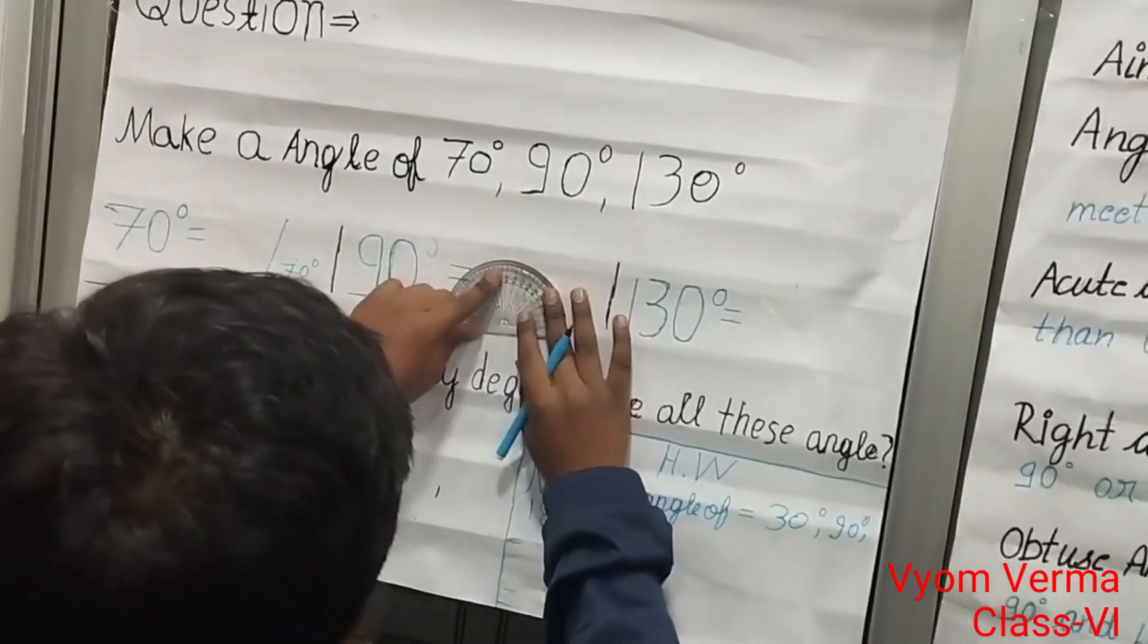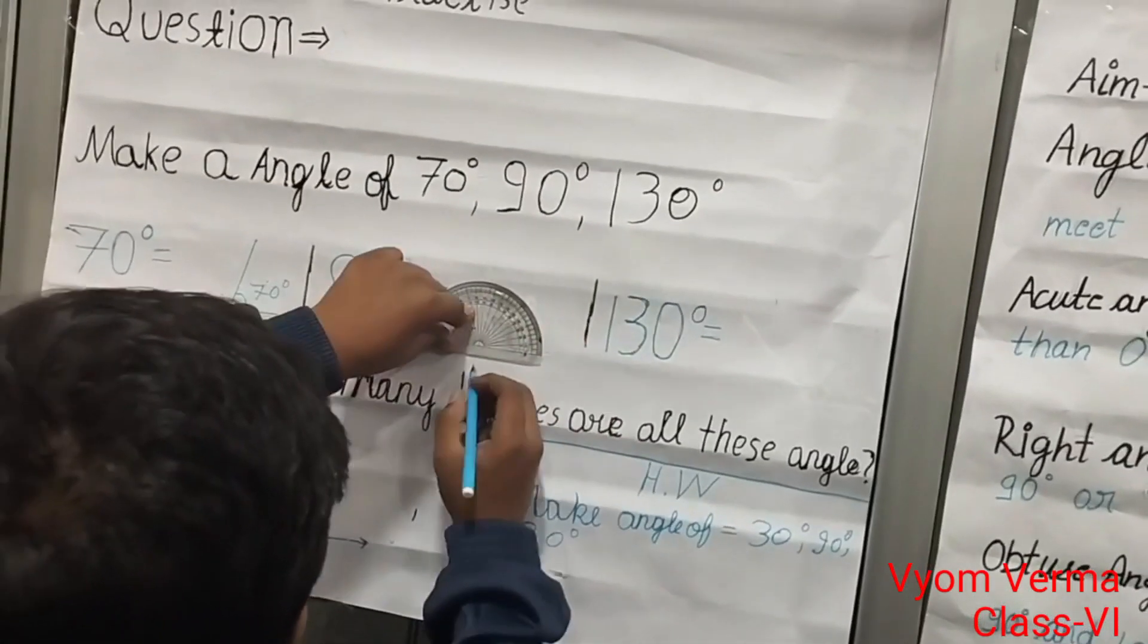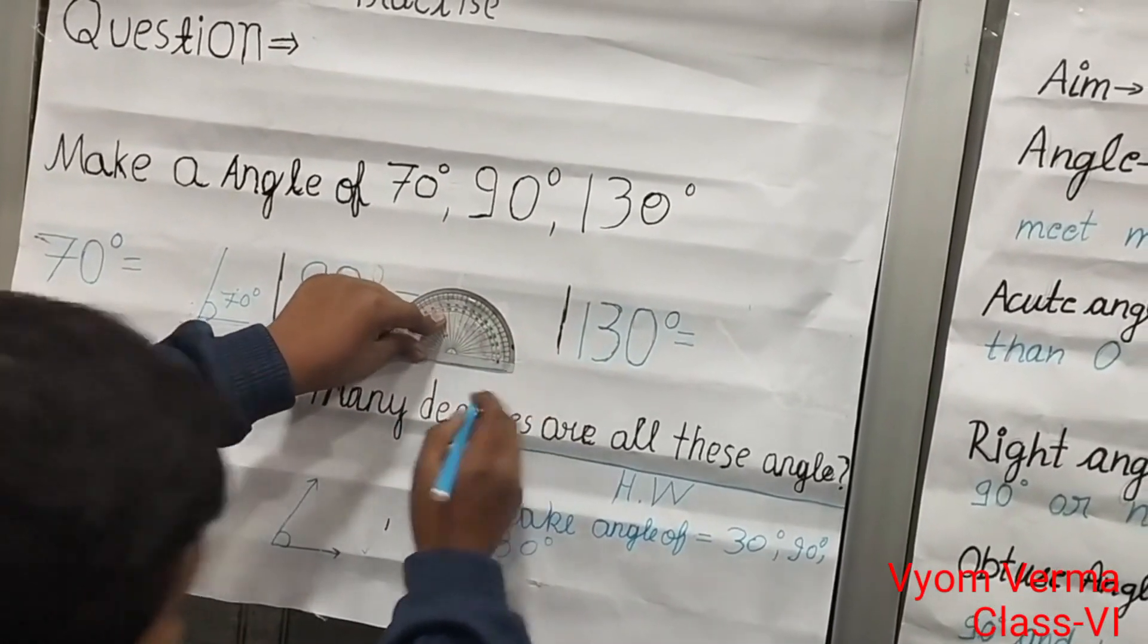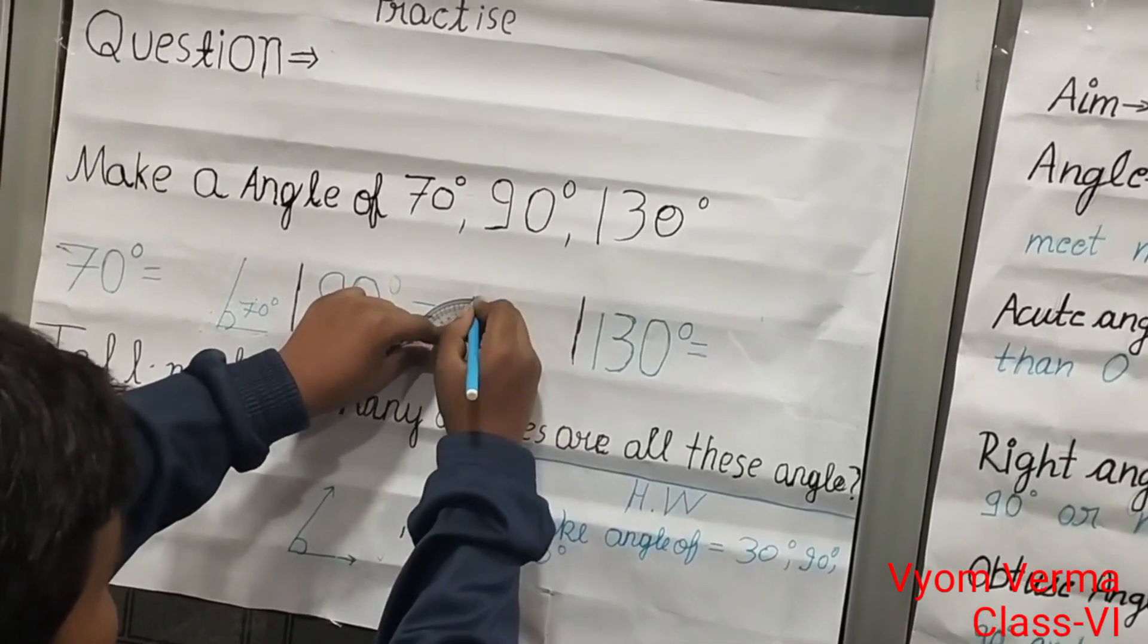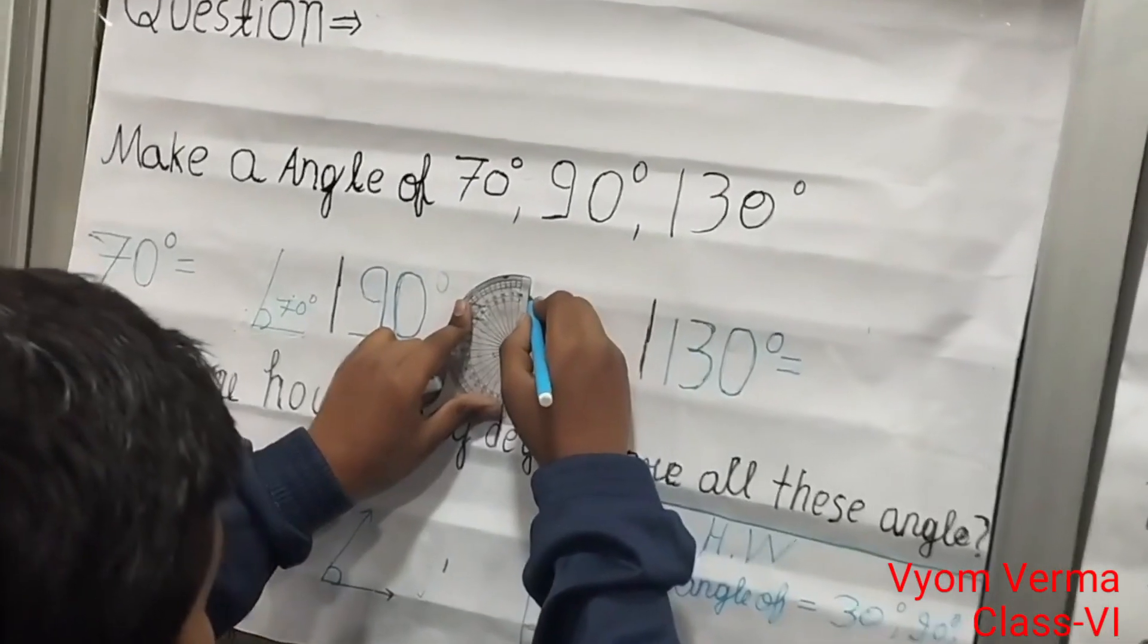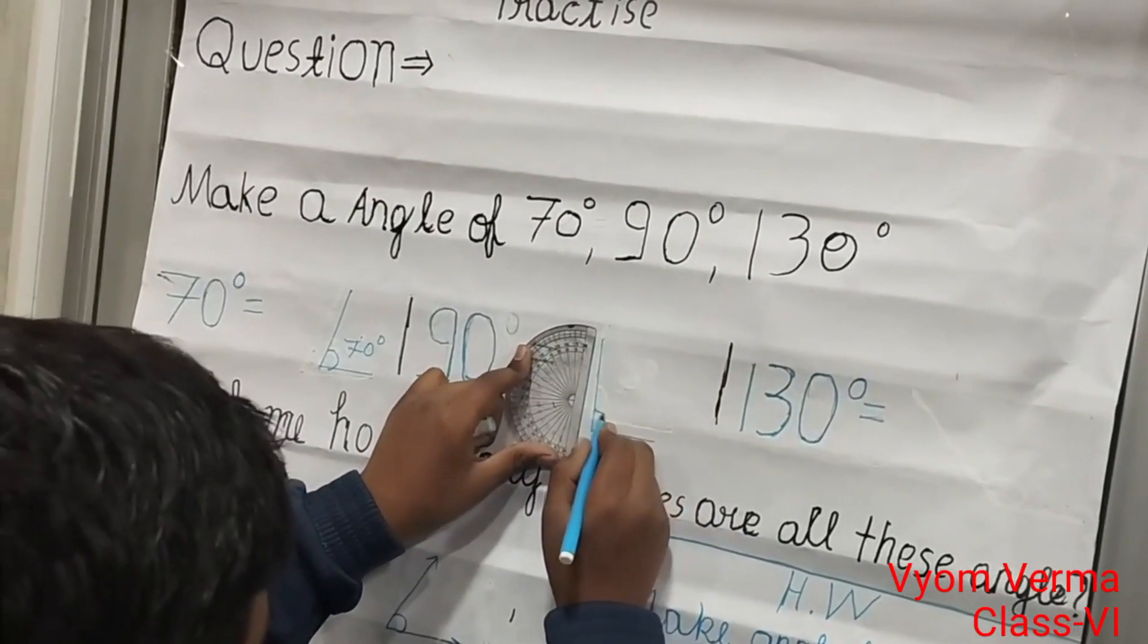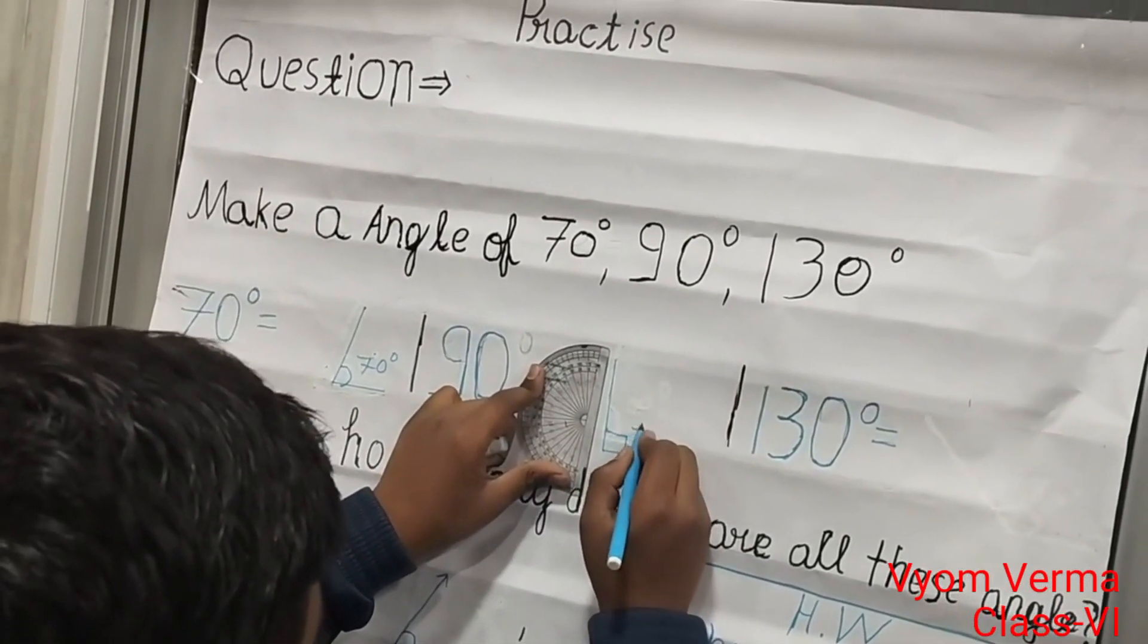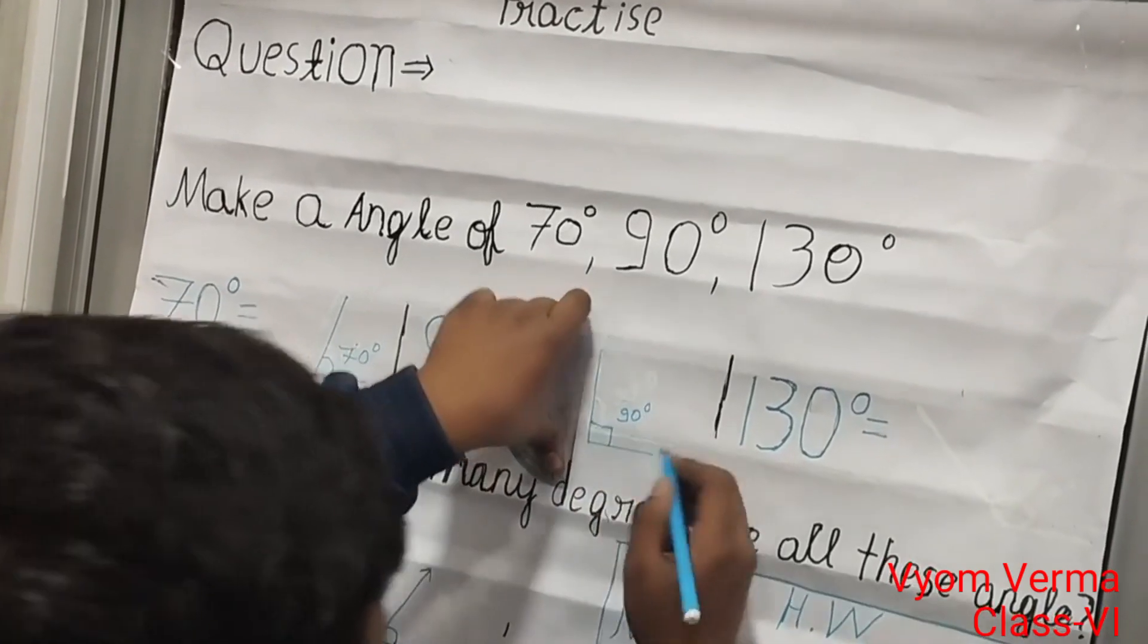90 degrees. Draw one straight line and put a dot on 90 degrees. Make a straight line. Here you can see, it is an example of a 90-degree angle.